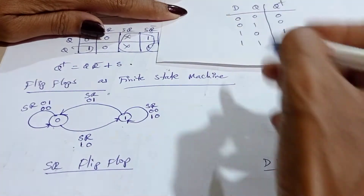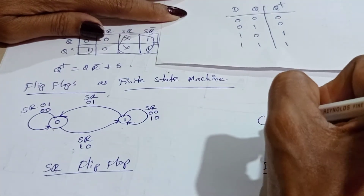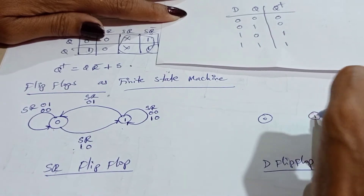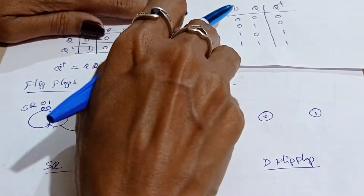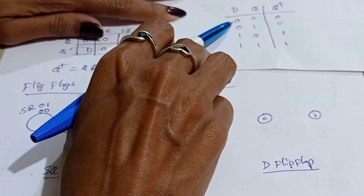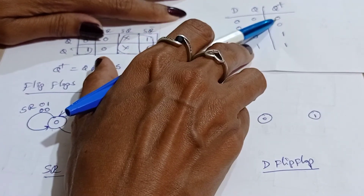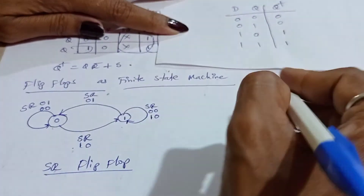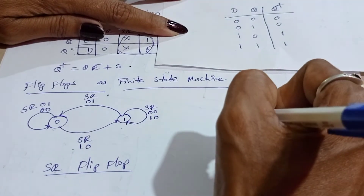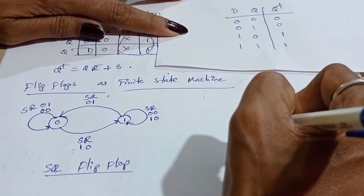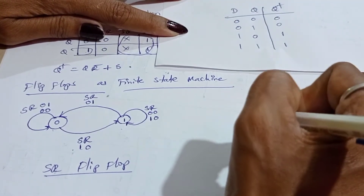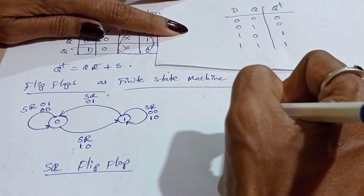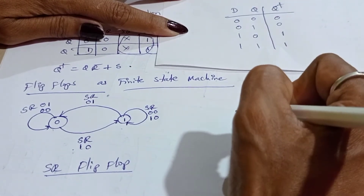State 0, state 1. When Q is 0, it is in the same state 0, that is D equals 0.